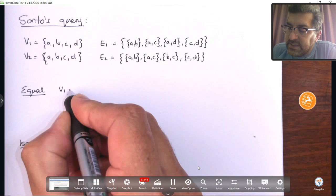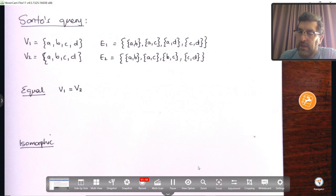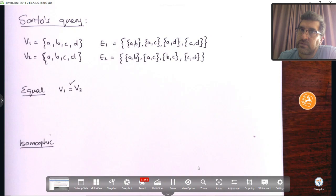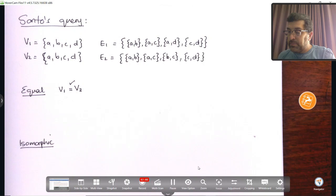For equal, first of all, you ask yourself, are the vertices in set 1 identical to the vertices in set 2? And we can see there's an A, a B, a C, a D in both sets. So the vertices are equal. So here you don't have to draw. For equal, you don't have to draw.